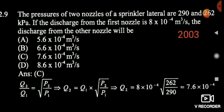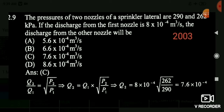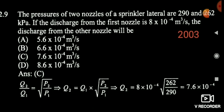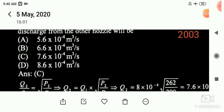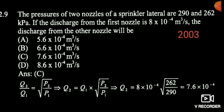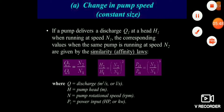Coming to the questions. The first question was asked in 2003 — a sprinkler is given with two nozzles. The discharge is given and two pressures are given: 290 and 262. It is simply asking the second discharge, that is the Q2 value.